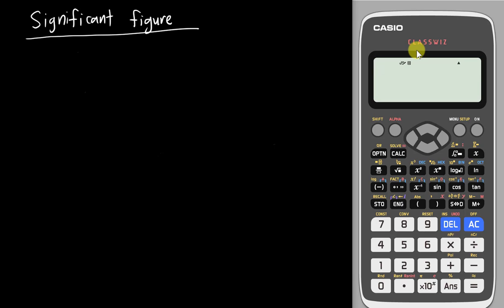First you have to understand what the meaning of Significant Figures is. Significant Figures is basically a rounding off method for you to round off any number.